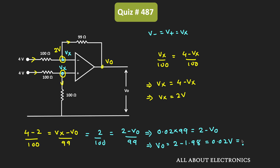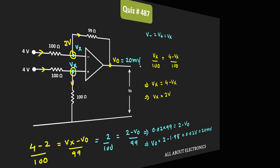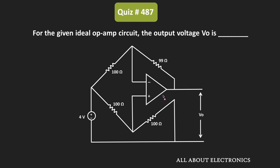That is equal to 20mV. So for the given circuit, the output voltage Vout is equal to 20mV. Therefore, for the given question, the answer is equal to 20mV.